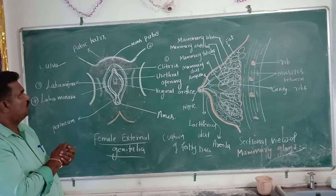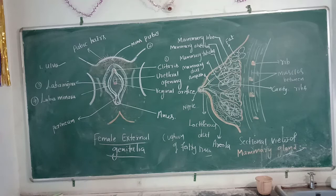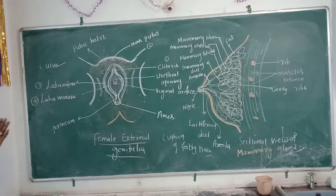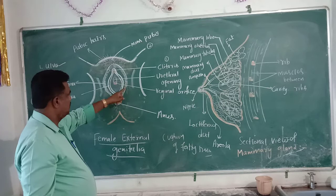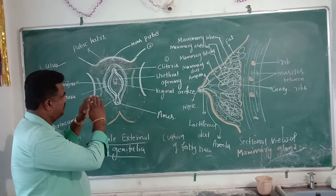Labia majora — it is the fleshy folds present on either side of the vaginal opening which surrounds the vagina, and these are called as labia majora.